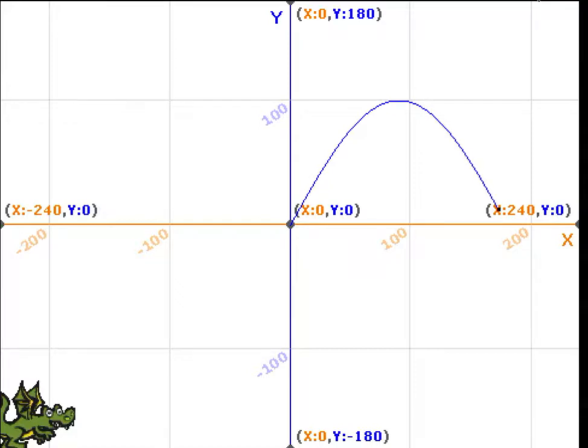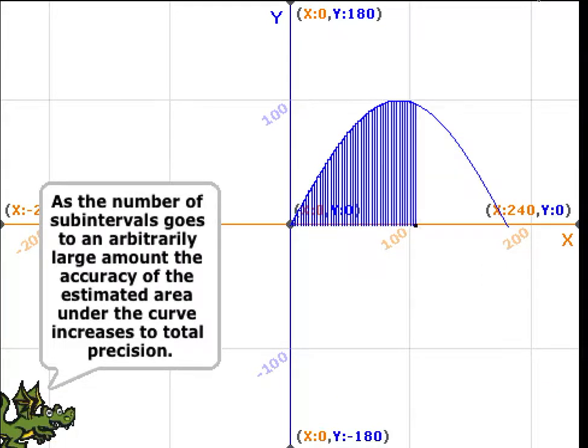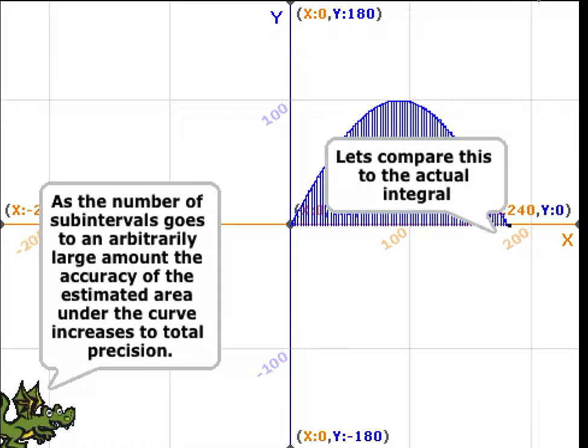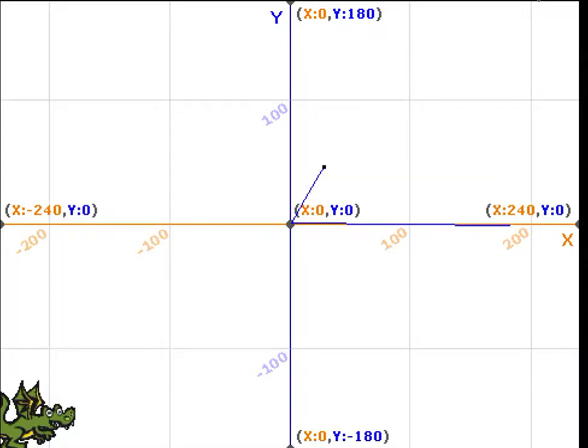And then to show what happens as the number of rectangles gets larger and larger, it asks us to put in a larger amount of rectangles. We'll try 80 this time. And then finally, it compares these Riemann sums to the actual area under the curve, which is the integral.